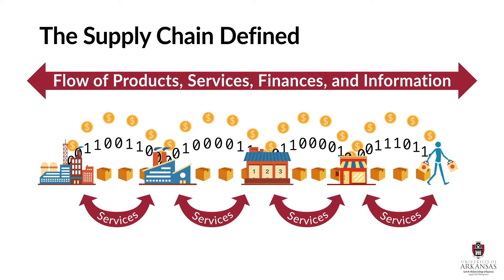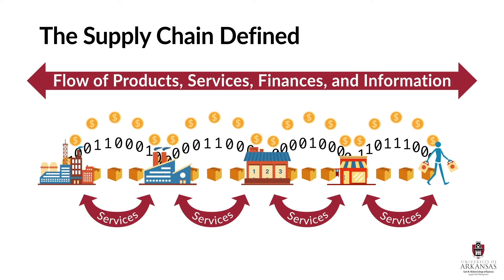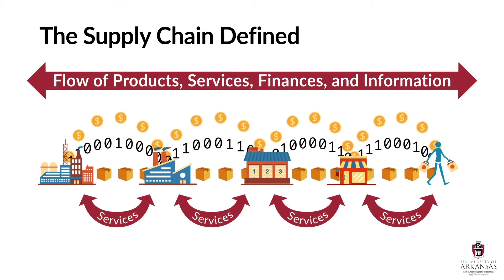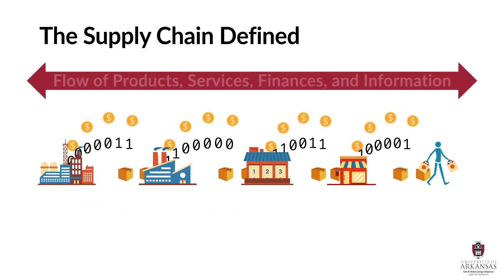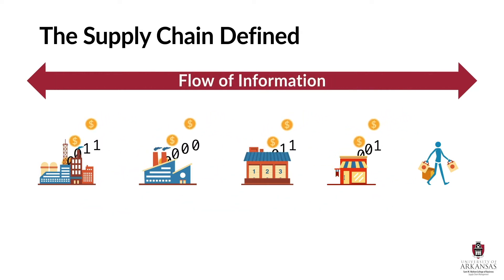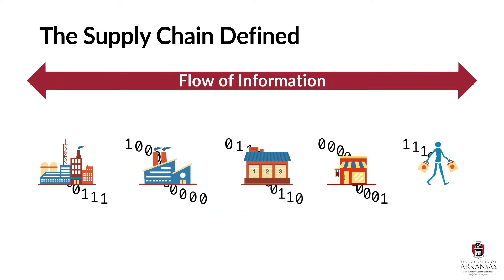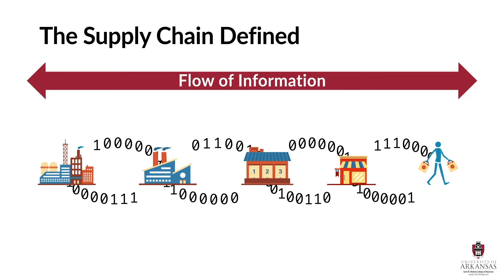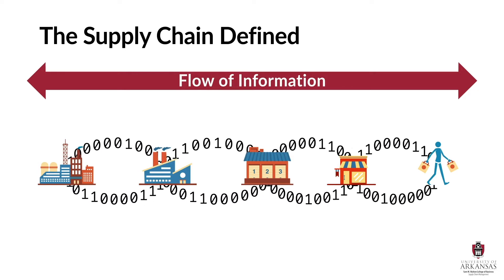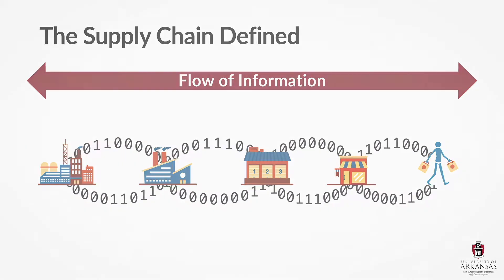Now there's a lot packed into that short definition, but for now let's just focus on the flow of information, or more importantly, the capability to flow information throughout a supply chain.